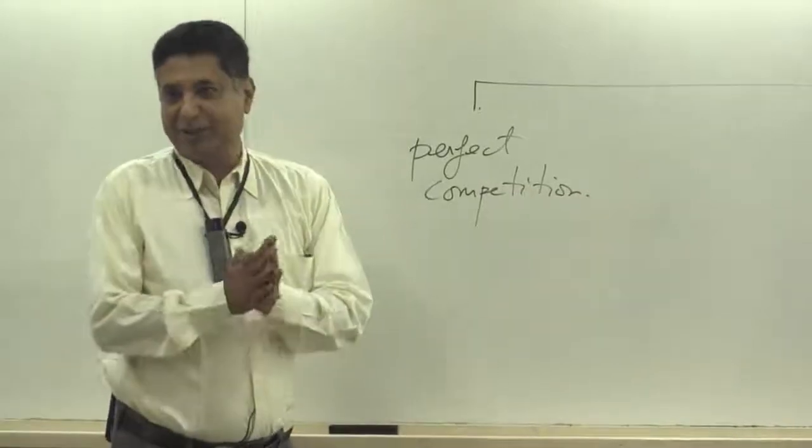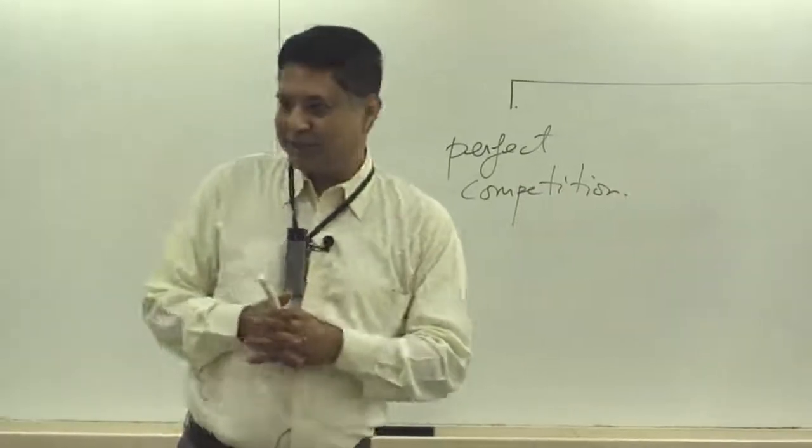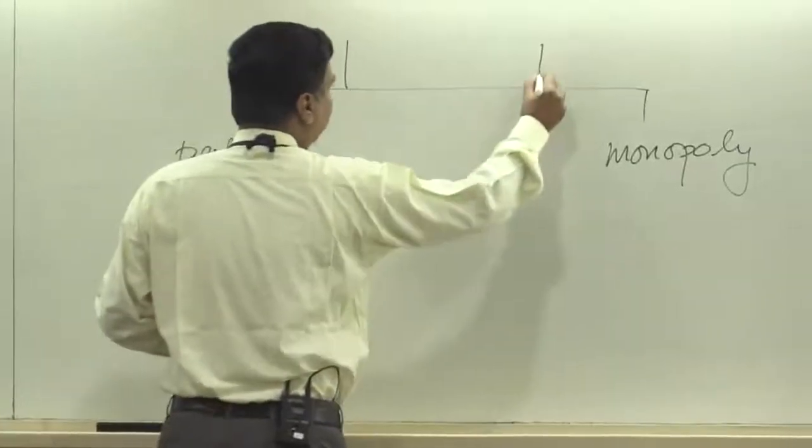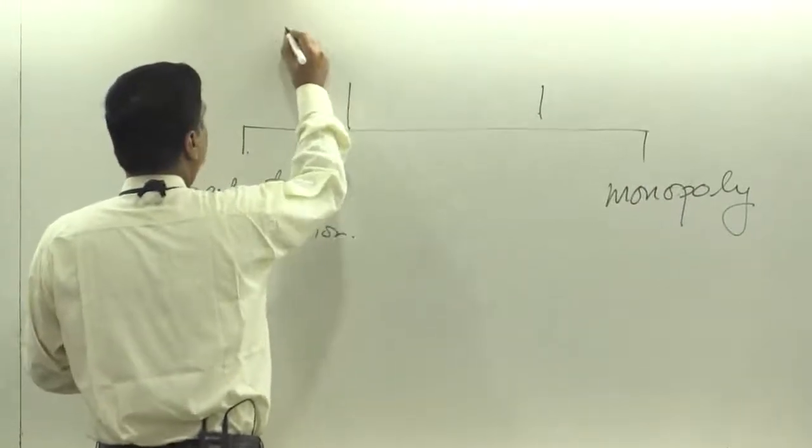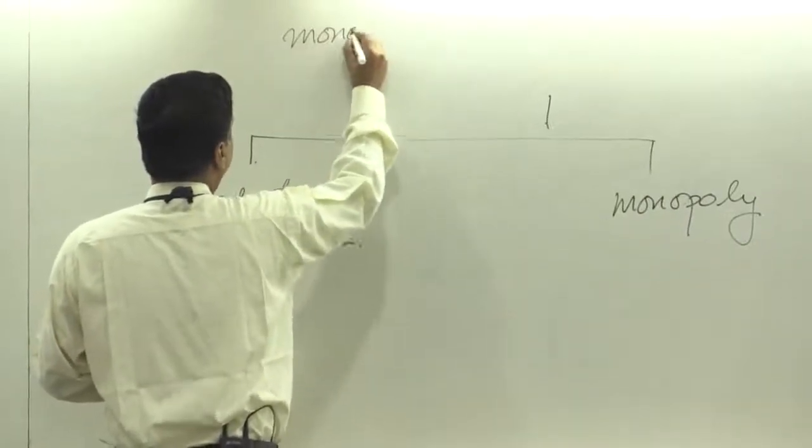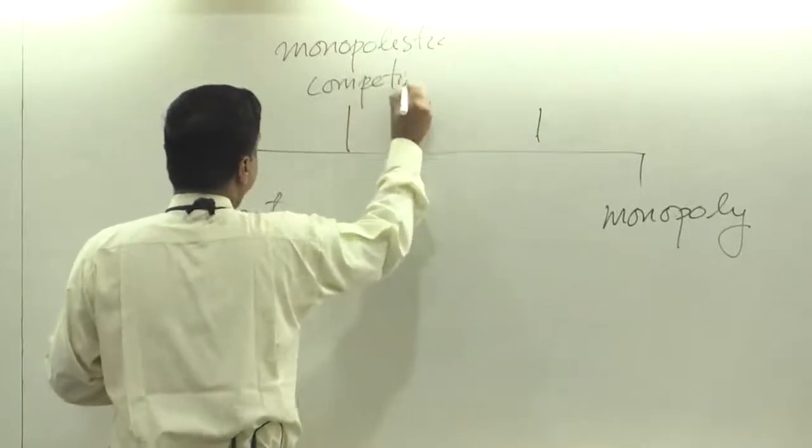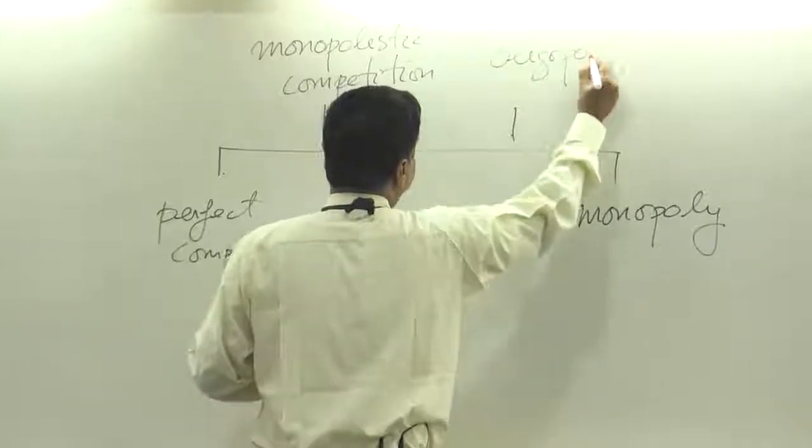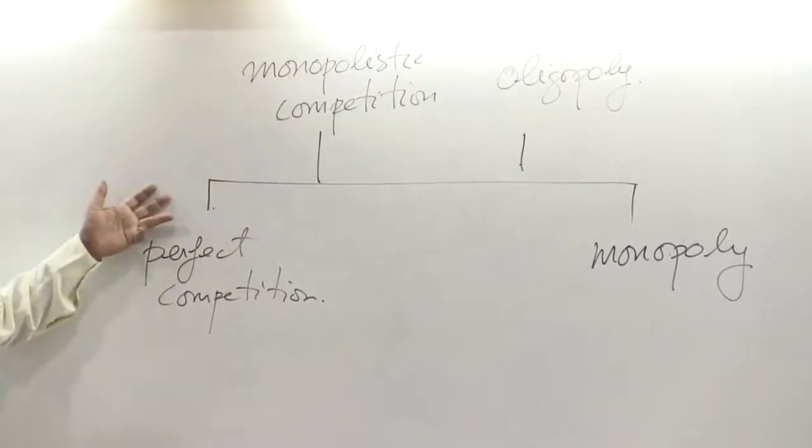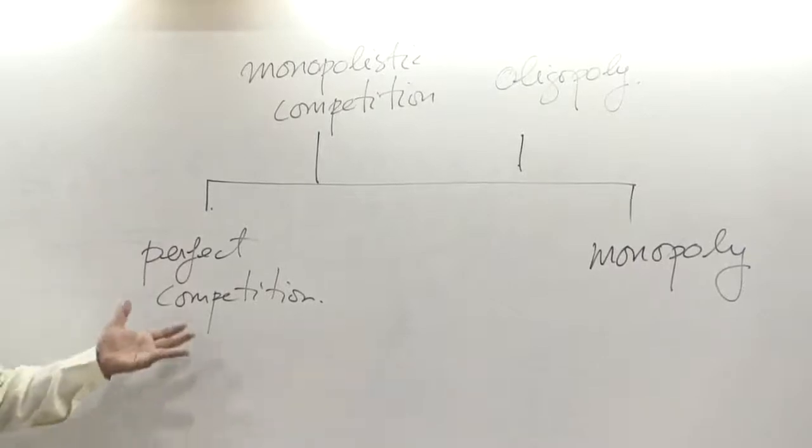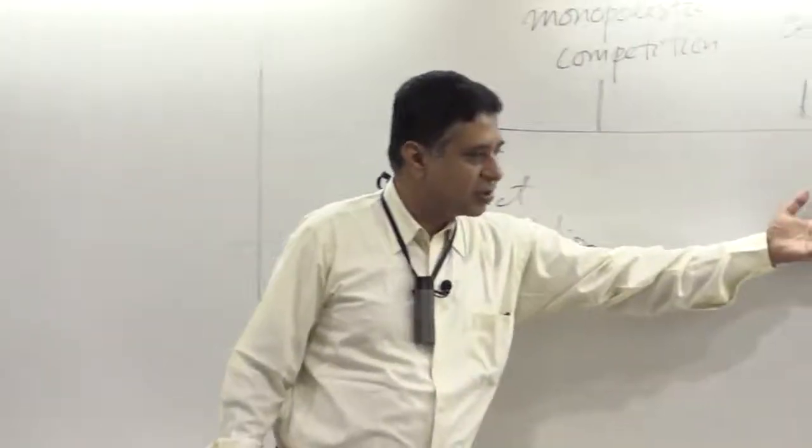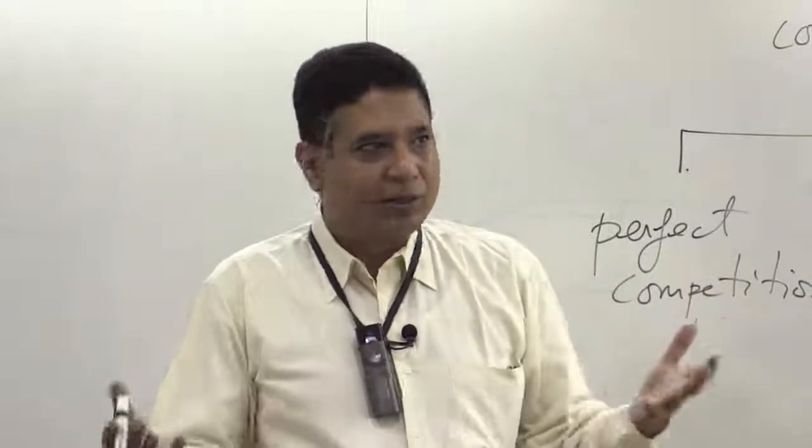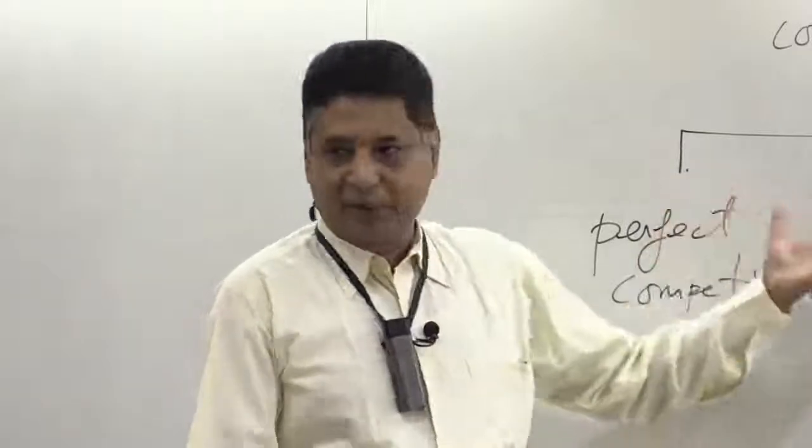We should complement it with something which does exist, and so we have two other kind of structures. One is called monopolistic competition. Monopolistic competition borrows some of the features of perfect competition and some of the features of monopoly and produces a workable model which is a lot like perfect competition.